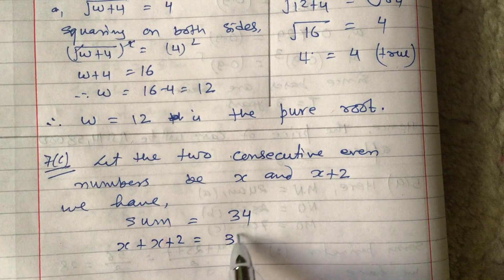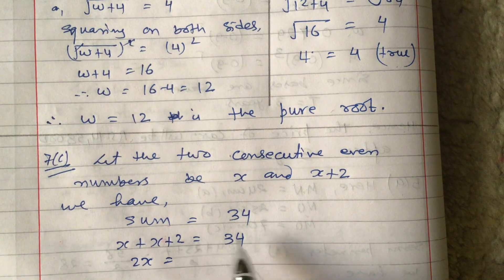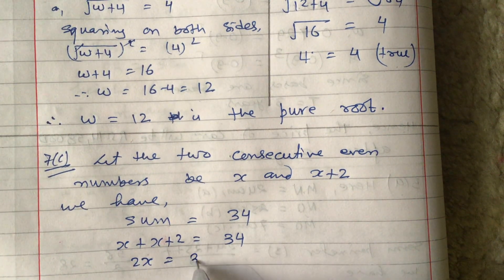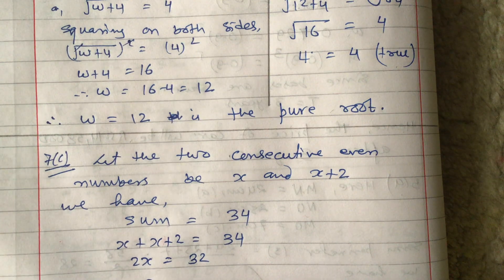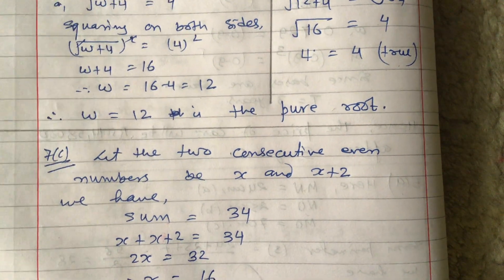x and x would be 2x. We can transpose to that side: 34 minus 2 will be 32. Therefore, the value of x is 16.